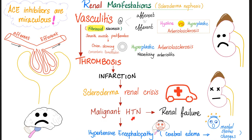Scleroderma renal crisis is an emergency because it causes malignant hypertension with end-organ damage — destroying the kidney and the brain. Hypertensive encephalopathy, specifically cerebral edema, leads to mental status abnormalities. If the patient has scleroderma nephropathy, give ACE inhibitors. ACE inhibitors are great for three kidney diseases: diabetic nephropathy, scleroderma nephropathy, and Henoch-Schönlein purpura nephropathy.